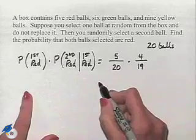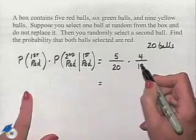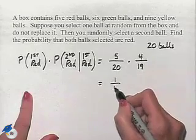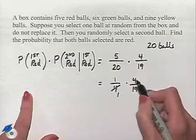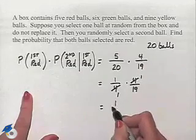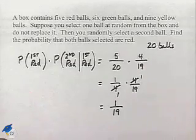Now we're going to evaluate this further. Notice that we can divide five into 20 and rewrite this as 1 fourth times 4 19ths. And then we'll divide the common factor of four to give us 1 19th as our probability.